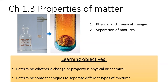In the last lesson, we learned to classify matter. In this lesson, we will describe matter's properties and changes. Matter can be changed physically, and matter can be changed chemically. Similarly, matter has physical and chemical properties. In chemistry, it is essential to understand both. By the end of this lecture, if you are given a property or a change, you will be able to determine whether it is physical or chemical.